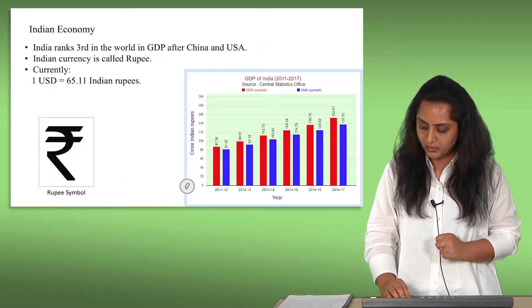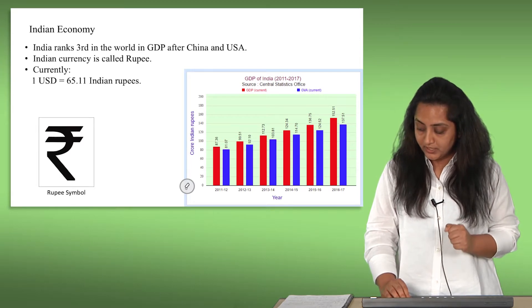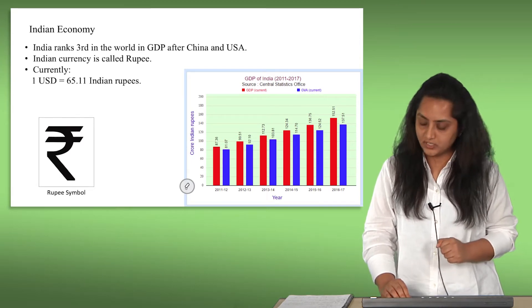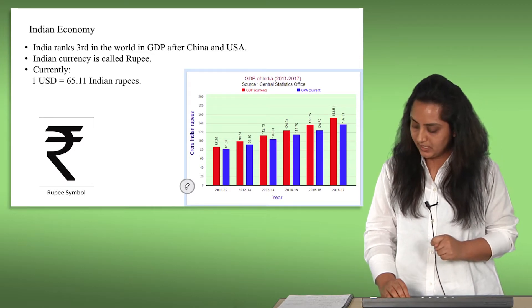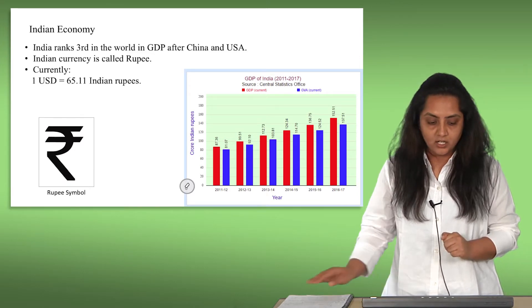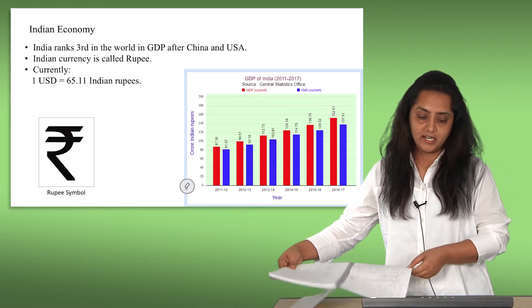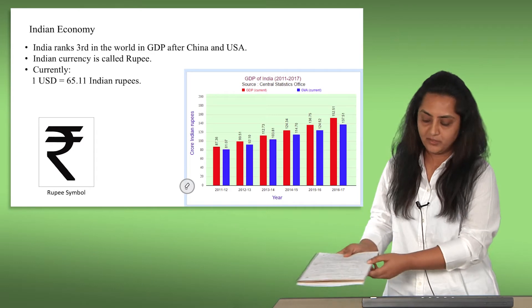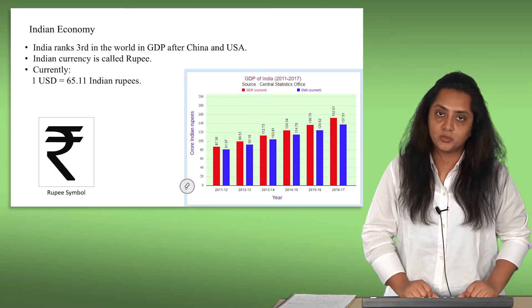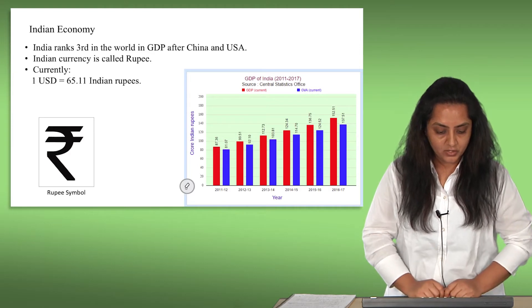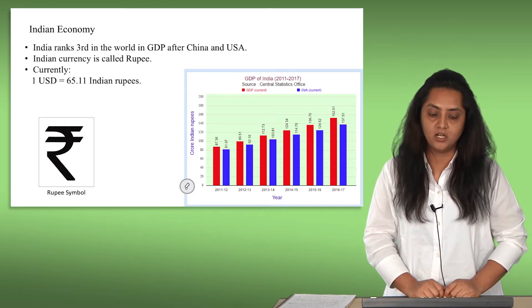Now we are also going to talk about the overview of the Indian economy. India is the world's largest democracy. It emerged as a major power in the 1990s and it is a fast-growing and powerful economy. On the slide you can see that India ranks third in the world in GDP after China and USA. The currency of India is called the rupee — the symbol you can see here on the screen — and currently one USD is 65.11 Indian rupees.